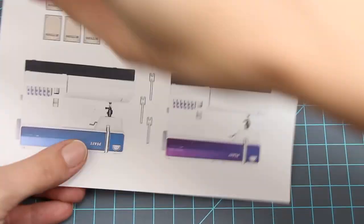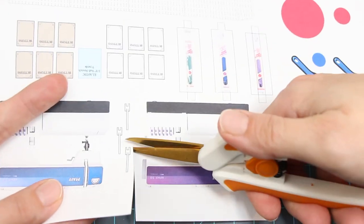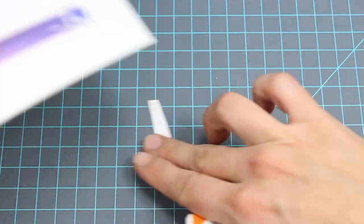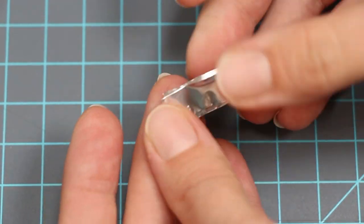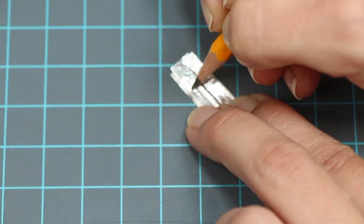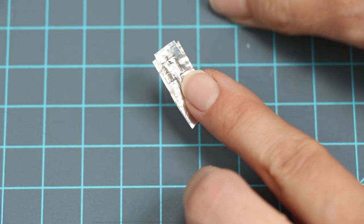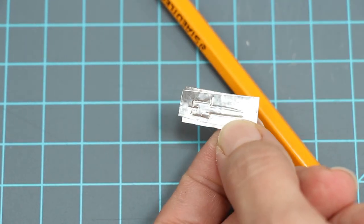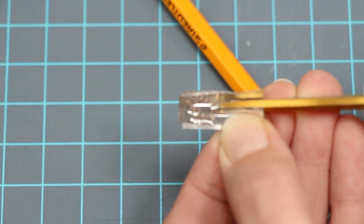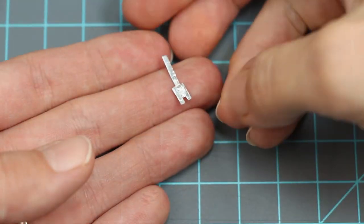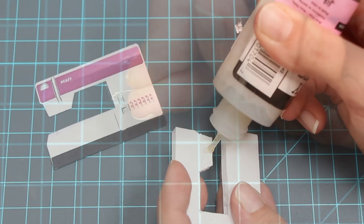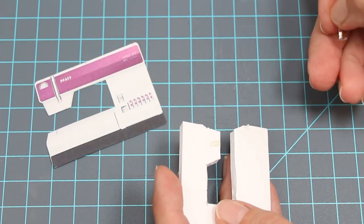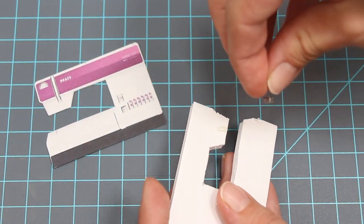Next, cut out one of the presser feet prints. Cover both sides with aluminum tape and cut it out again. Bend it like so. Glue the presser foot on the back side of one of the cutouts.